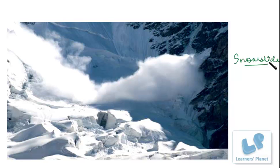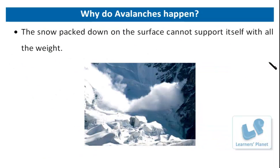Now we need to know how avalanches occur. An avalanche can be composed of many different kinds of snow depending on the region, temperature, and weather. It could be compiled of loosely packed, light fluffy snow — which can still be very dangerous even though it may not appear threatening — and it could also consist of a thick slab, which is an area of tightly packed snow that separates itself from its surroundings. The snow packed down on the surface cannot support itself with all the weight, and that is why avalanches happen. Major temperature changes, rapid wind speed, and man-made influences are the main causes of why avalanches occur.